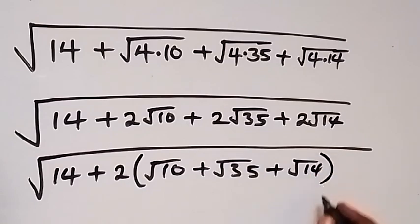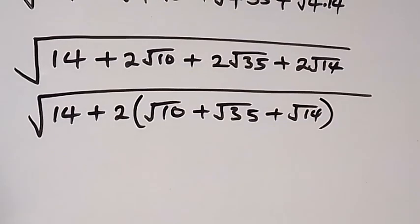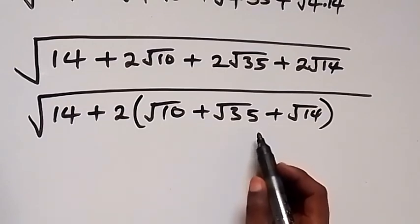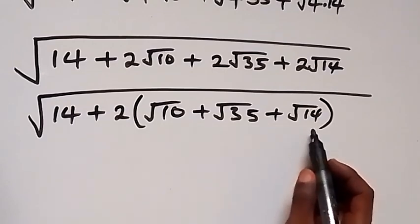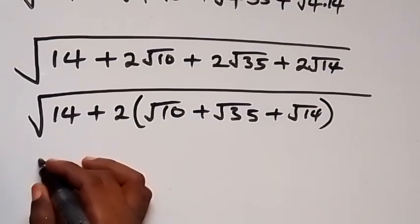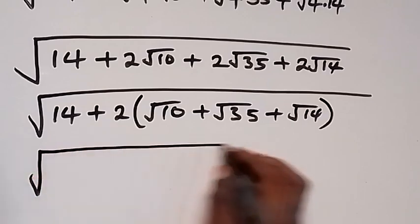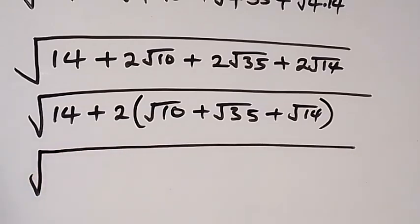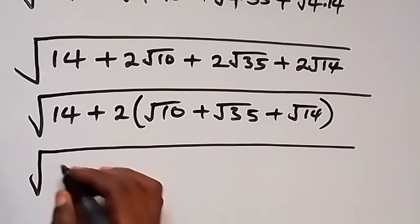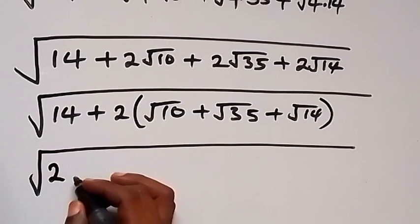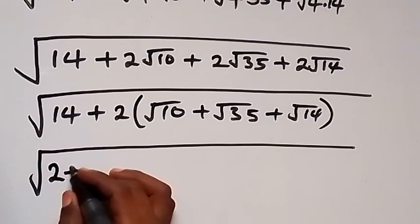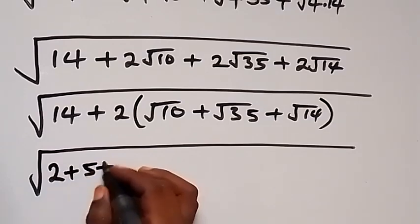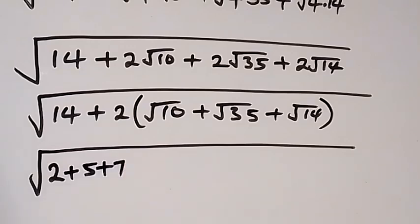In the next step we can write this: root 10, root 35, and then root 14. And this will become root 14 — let's write 14 as 2 plus 5 plus 7, which gives us 14.